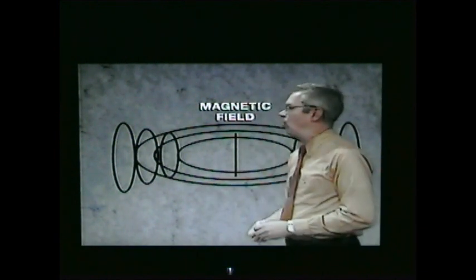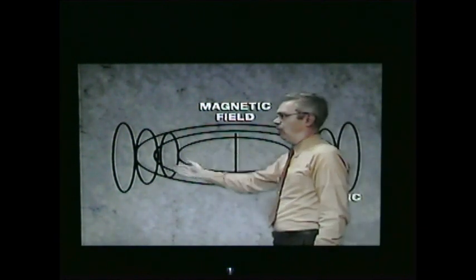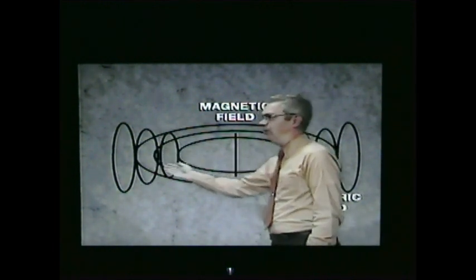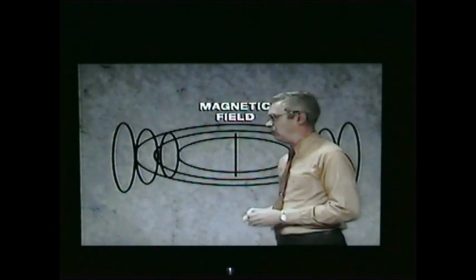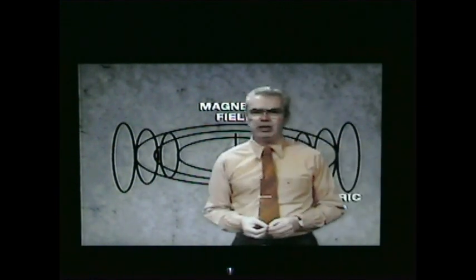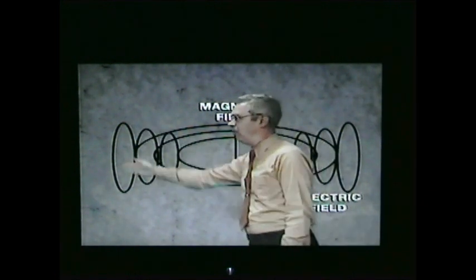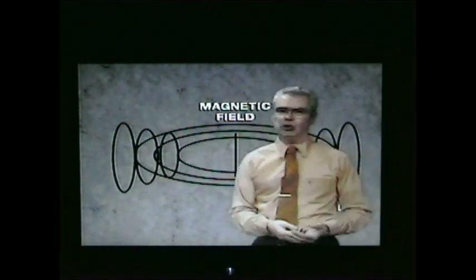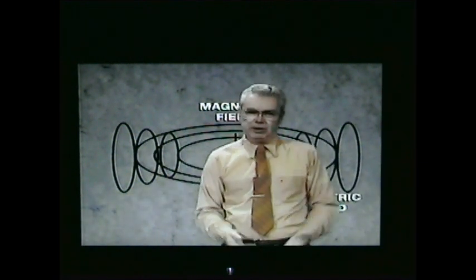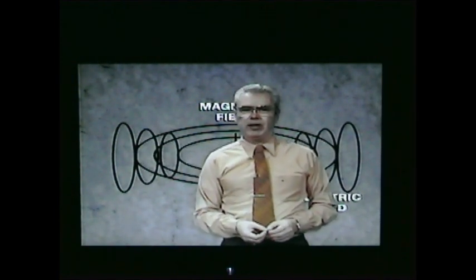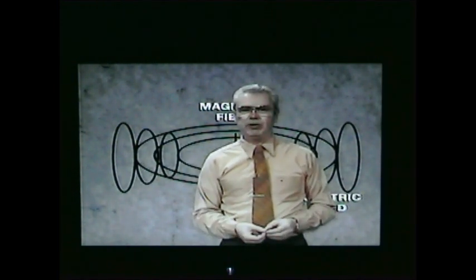Maxwell's equations also say that if the electric field is varied quite rapidly, it will produce another magnetic field in all directions. And since that magnetic field is varying rapidly, it produces another electric field, which produces another magnetic field. The whole process continues with these fields expanding further and further away from the source at the speed of light. This is how an electromagnetic wave, or a radio wave, is produced.